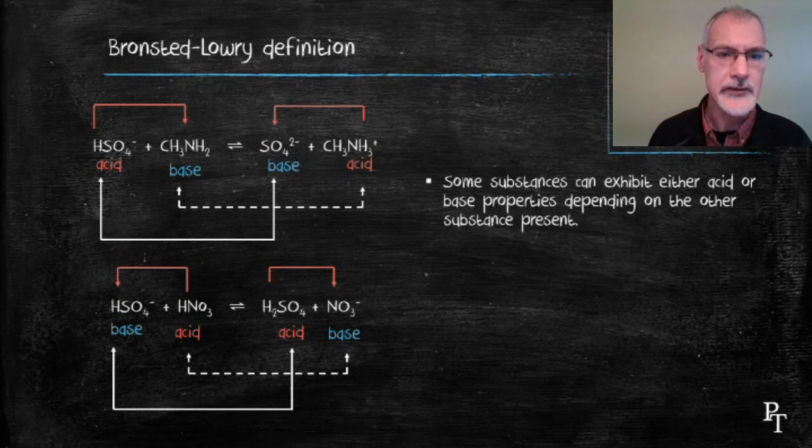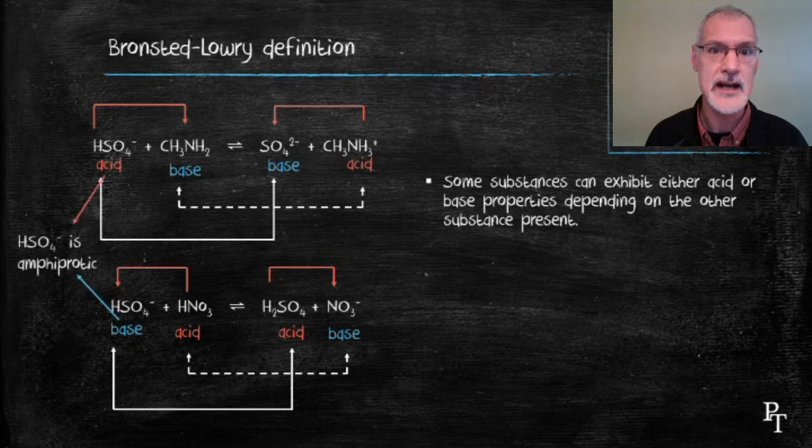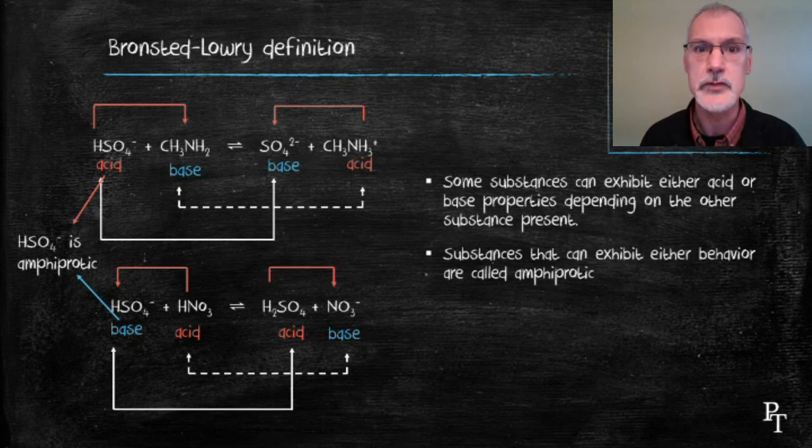Now, some substances are capable of acting as both acids and bases. For example, in this case, we see that the hydrogen sulfate ion is capable of acting as either an acid or a base, depending on what it's paired with. Such substances are called amphiprotic.